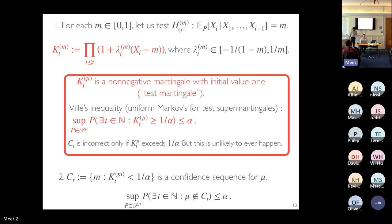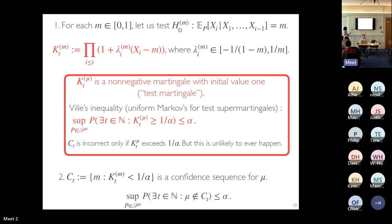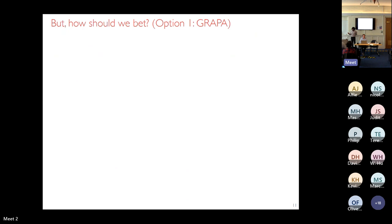Ville's inequality — a time-uniform version of Markov's inequality — states that for a non-negative martingale, the probability that its entire path ever crosses 1/alpha is at most alpha. The confidence set is incorrect only if mu is missed, meaning K_t^mu exceeds 1/alpha. By Ville's inequality, the probability of this is at most alpha. The proof is one line: martingale + Ville's inequality = confidence sequence.